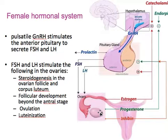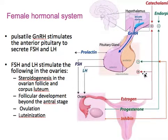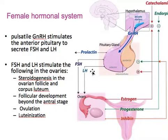FSH and LH are also involved in the development of follicles after the antral stage, as well as the induction of ovulation and luteinization after ovulation. The ovaries secrete estrogen, progesterone, and inhibin. Estrogen provides mostly a positive feedback to the anterior pituitary to gradually increase LH and FSH secretion, producing the LH surge.